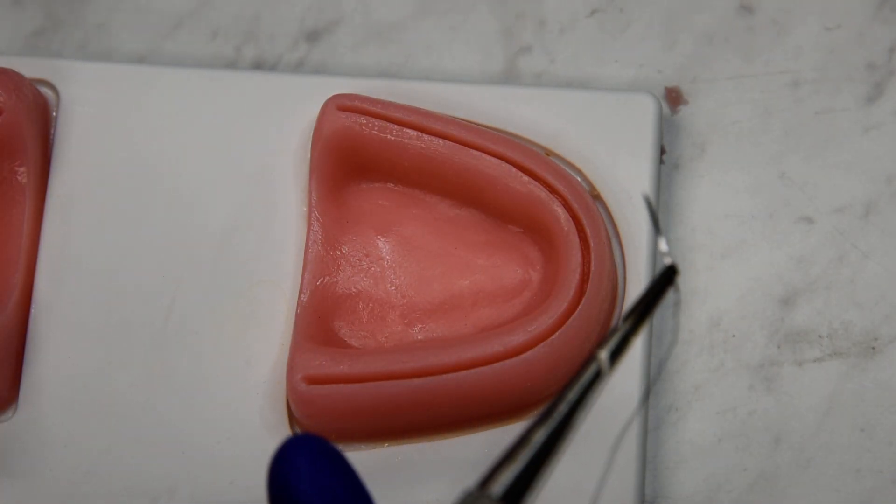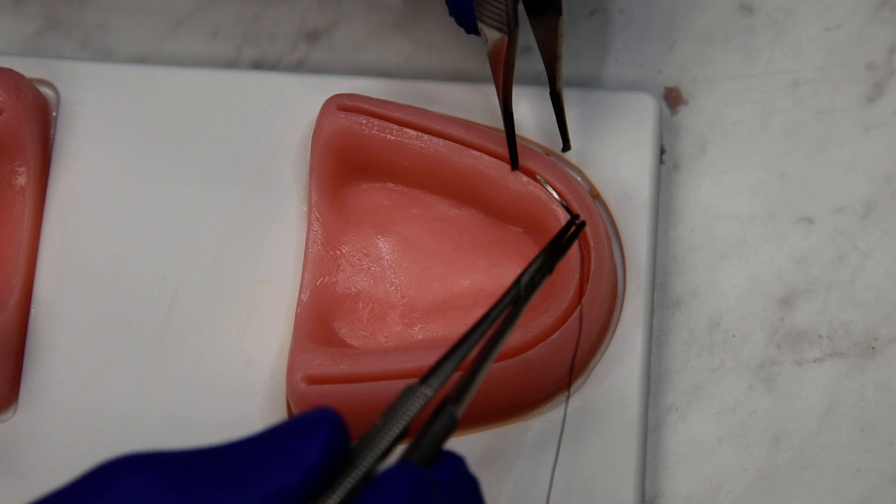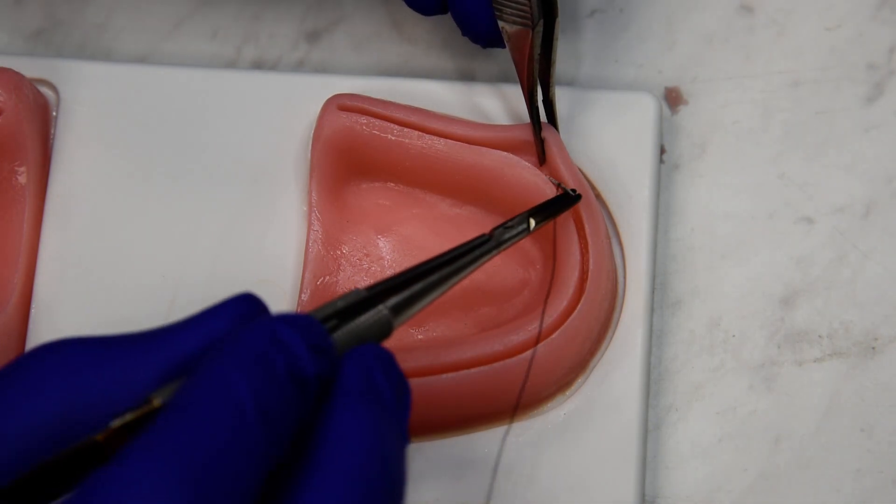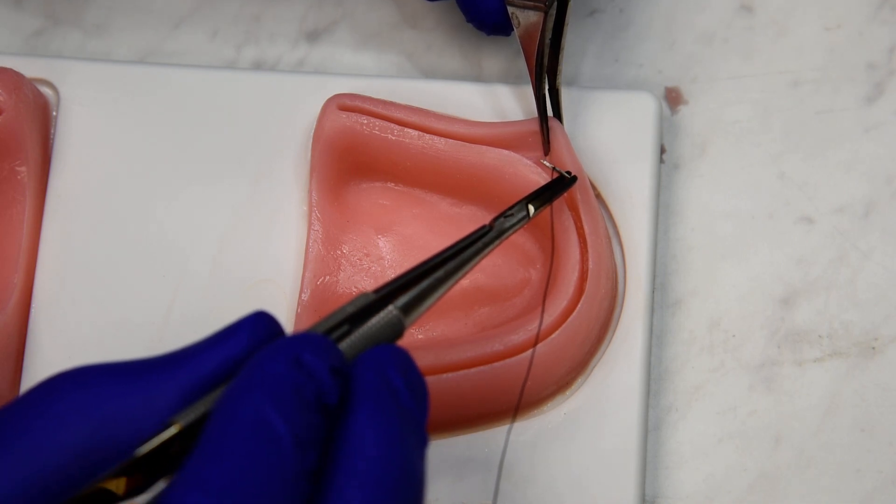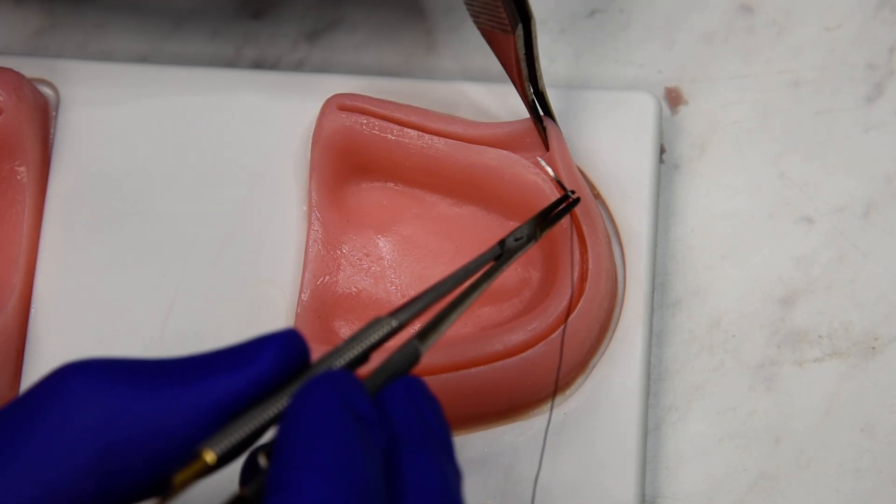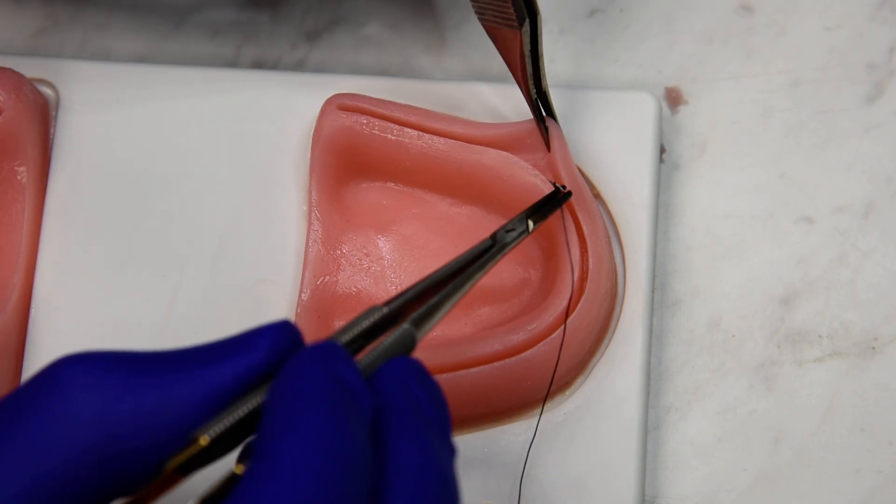For a subperiosteal mattress suture, our first bite is going to be deep to the flap on the buckle, just engaging the periosteum. So we're not coming out the buccal flap, and often we're deeper than the vestibule, unlike this model.